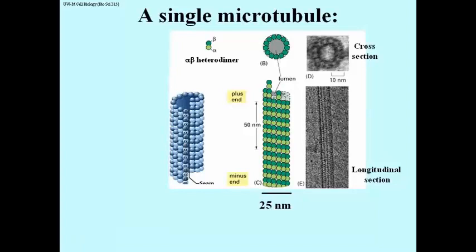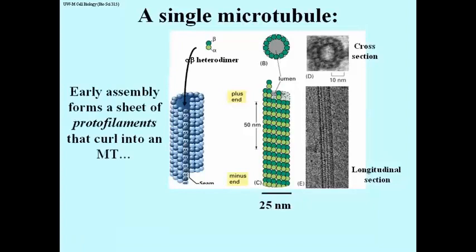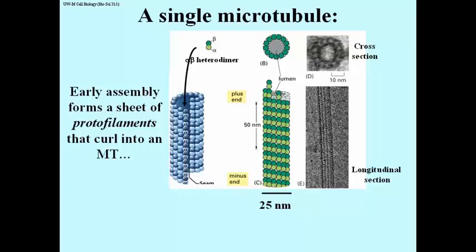Let's take a look at a single microtubule. Alpha-beta heterodimers will add to each other to form a flat sheet called a protofilament. When it gets long enough and wide enough, that sheet will curl — and that's what you're seeing here, looking at the blue microtubule image. Eventually a seam will form and you will get an actual tubule, as shown on the right.